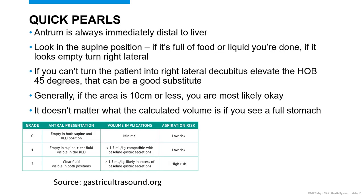Here are some quick clinical pearls. If you're looking for the gastric antrum and feel a little lost, the antrum is always immediately distal to the liver. If you look in the supine position and the antrum appears full of heterogeneous solids or clear liquids, you're done — the patient is considered Grade 2 or high aspiration risk. If the antrum appears empty supine, you still have to evaluate in the right lateral decubitus position. If there's a clinical reason you can't turn the patient, you can lift the head of the bed 45 degrees for a generally similar assessment. If you calculate the area and it is less than 10 centimeters squared, you should generally be okay. However, if you see heterogeneous findings suggestive of a full stomach, the patient is Grade 2 regardless of the calculated area.